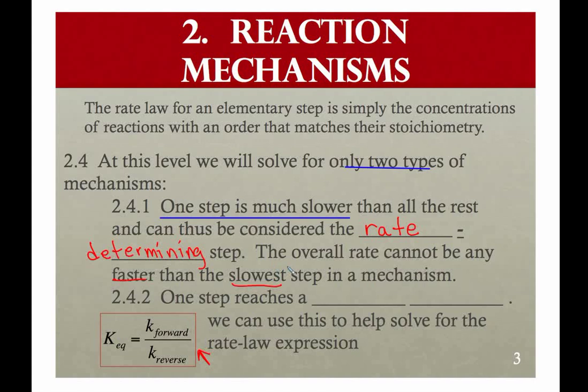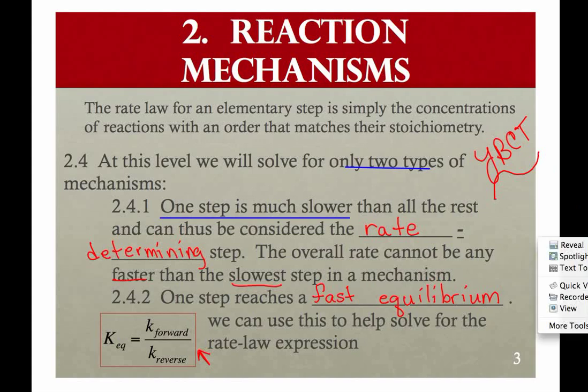And then we want to talk, I'll delve into this just a little bit more, but we're going to talk about one elementary step reaching a very fast equilibrium. That means that the forward rate is equal to the reverse rate, and it appears as if the reaction has stopped. Now we're going to work on a couple of these and get some more terminology. So until then, this is signing off.